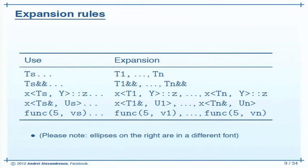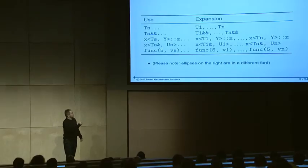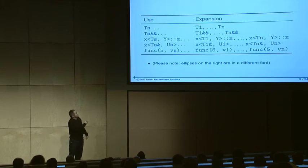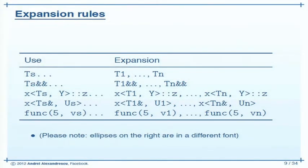If you have two lists of types, Ts and Us — the suffix 's' indicating plural — and they're both adorned with `...`, they're going to expand in lockstep. Finally, a function call that uses some non-variadic stuff alongside some variadic stuff is going to nicely expand into applications to each element in the list of values. So these are the expansion rules — what you can expand and what it will expand into.